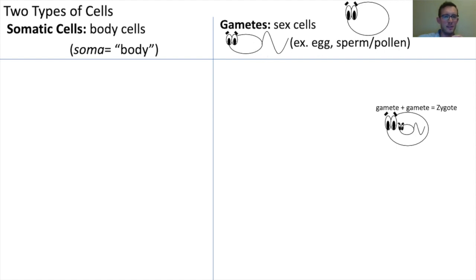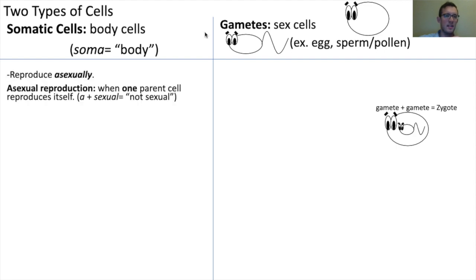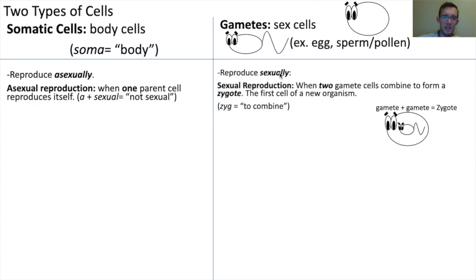The main difference between these two types of cells is the types of reproduction they're involved in. Somatic cells reproduce asexually — that is, they reproduce without sex, which is just when a single parent cell reproduces by itself. Whereas gametes reproduce sexually, and they're involved in sexual reproduction, which means there are two parents involved.